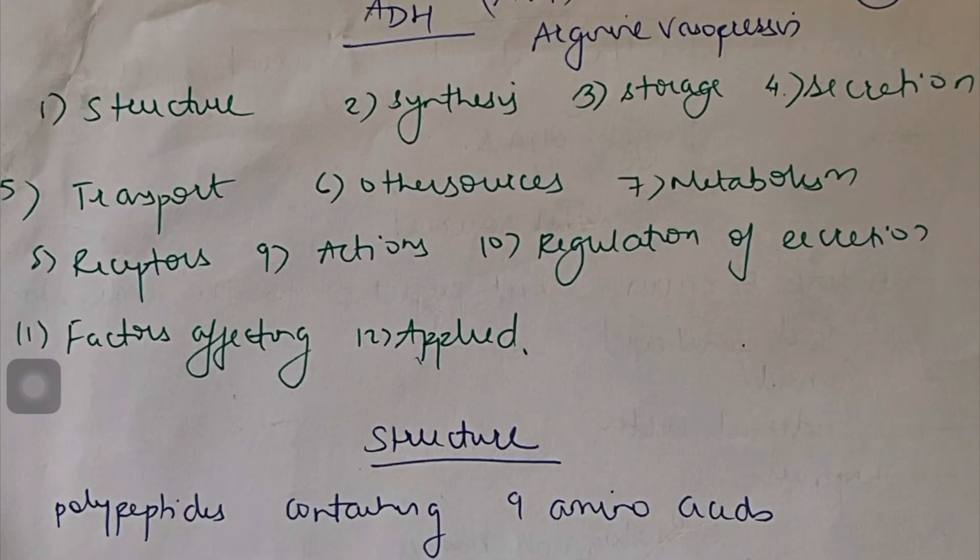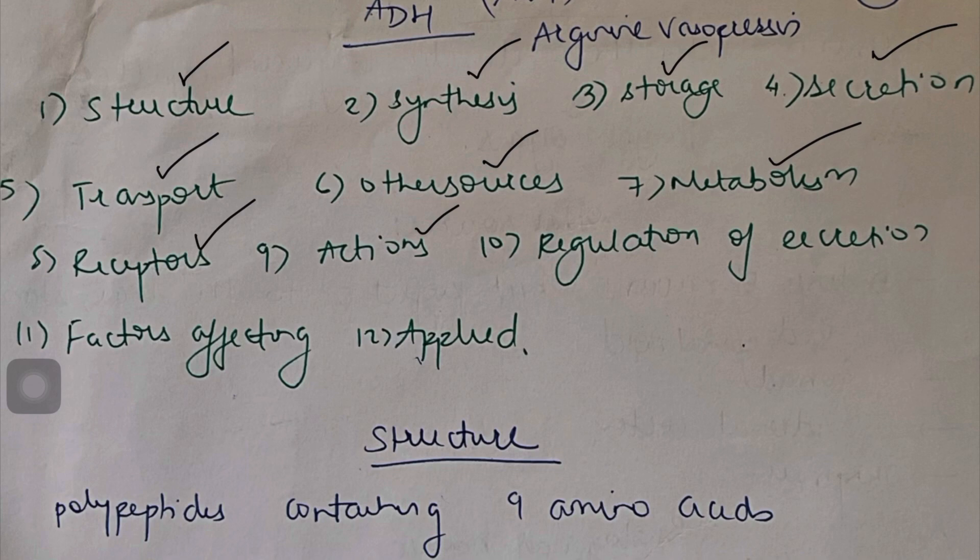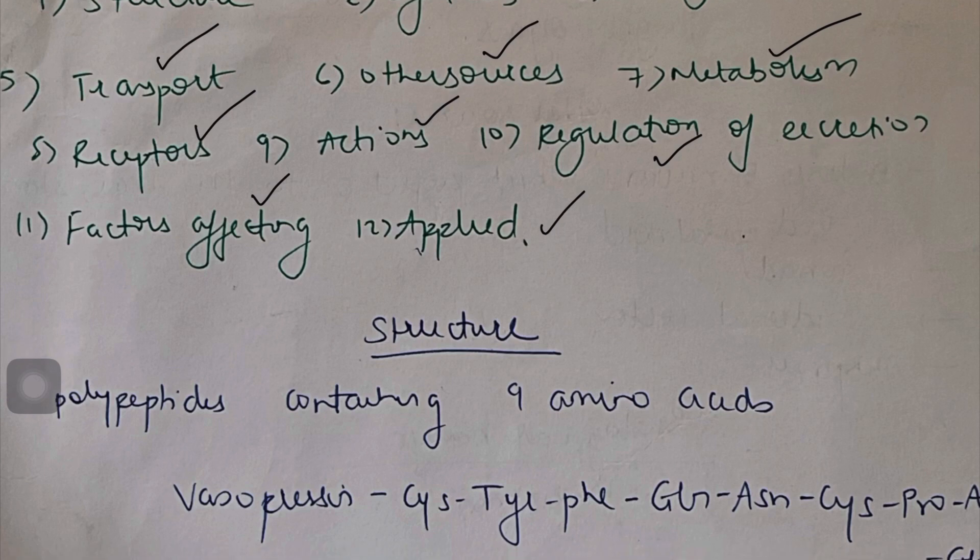When you write an answer, you should always remember that an answer has a pre-forma or a structure. I call it the SUCINT. So my students in CMP know I call it the SUCINT. The first here is structure, synthesis, storage, secretion, transport, other sources, metabolism, receptors, actions, regulation, factors affecting, and ultimately applied. So let's start with the structure.